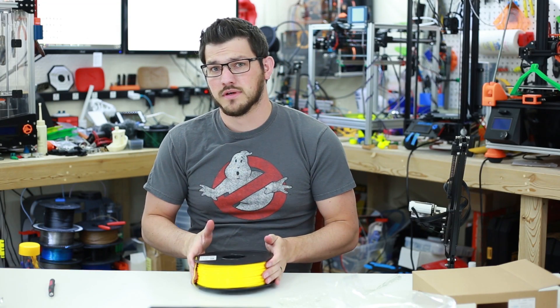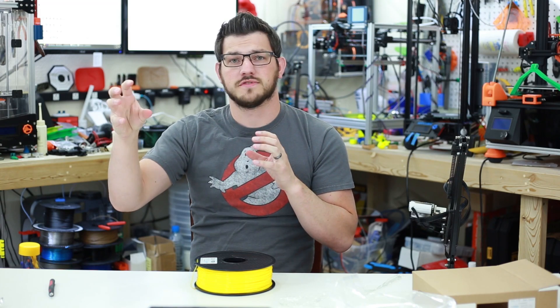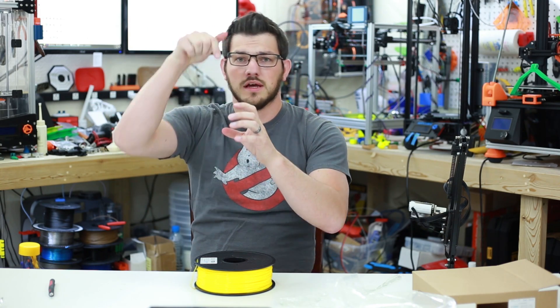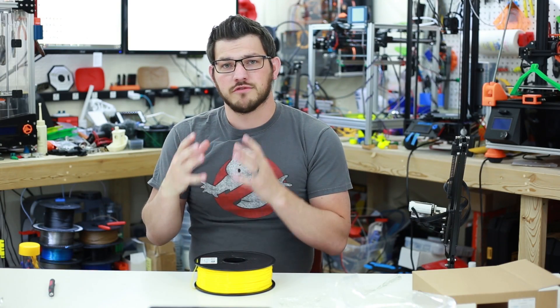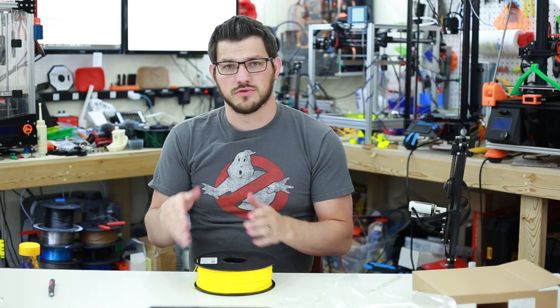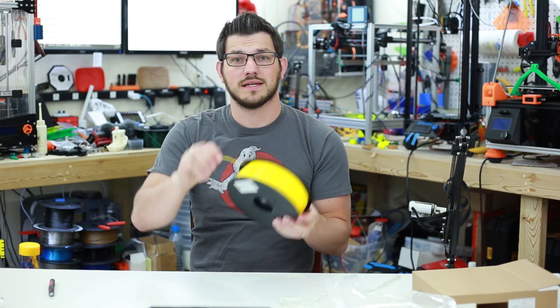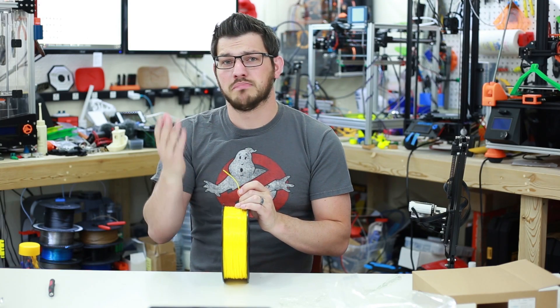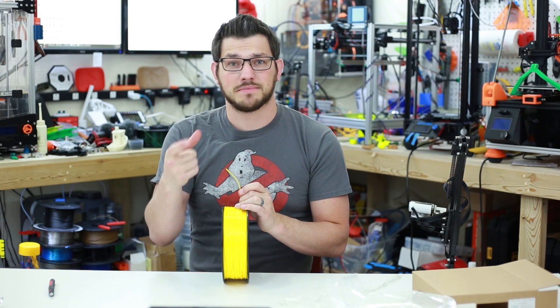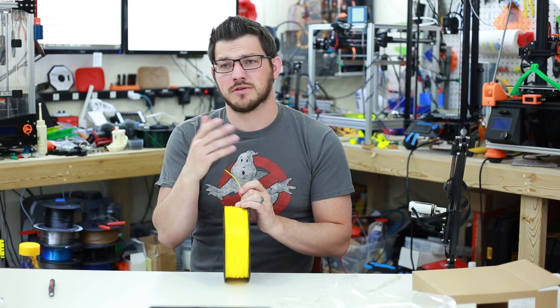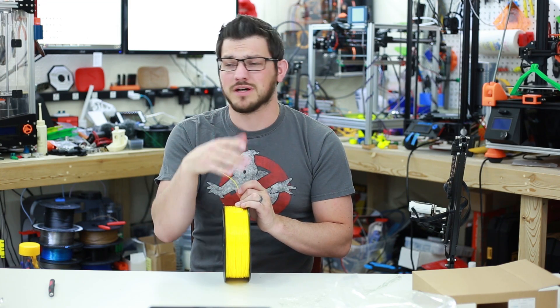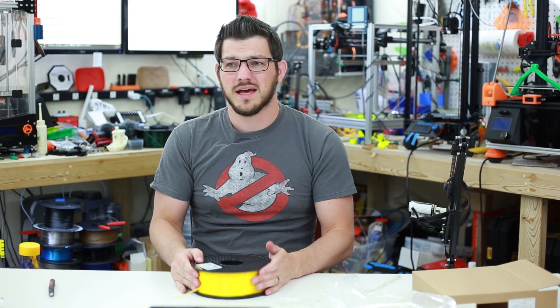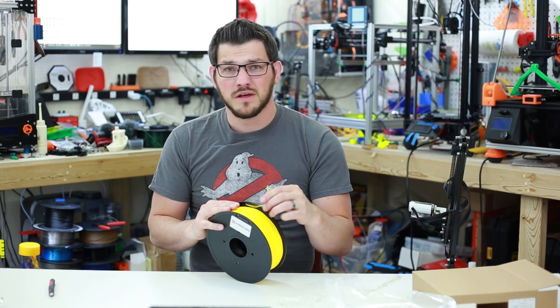A Bowden-style printer is an extruder that's offset somewhere on the printer. There's a great big Bowden tube, a PTFE tube, that leads down to the extruder and then gets pushed out. You have a lot more driving force behind a direct drive extruder, and especially for flexible filaments, because these have to go around the gear. There's a tendency to get kind of jumped up because normally most Bowden extruders have gaps in them.